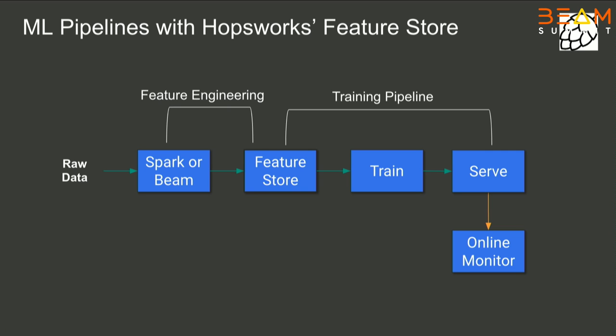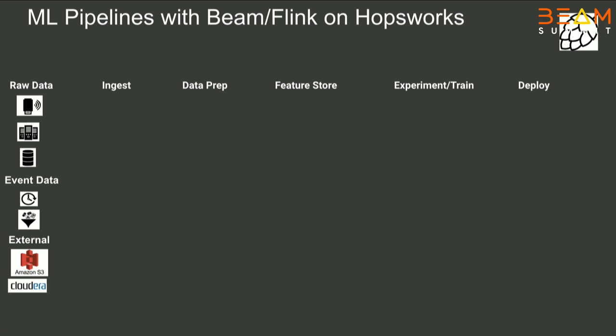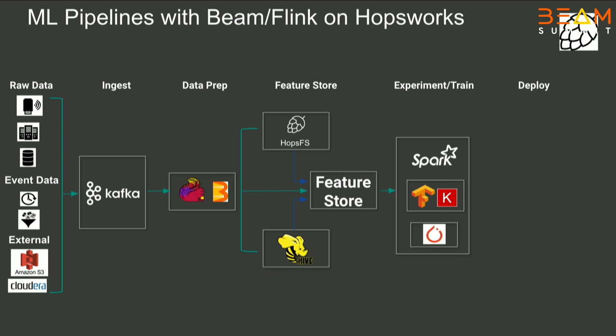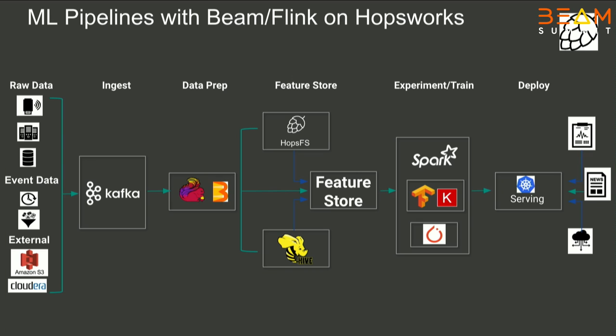The next example is HobbsWorks' feature store and machine learning pipelines, where feature engineering can be done with Beam as one of the options — Python on Flink again. Kafka is the input, data preparation is done with the Flink runner, and then the features are stored in the feature store. Beam is used here for TFX machine learning support for feature engineering, TensorFlow Transform, data validation, and also for model analysis. The team will talk about this more in their talk this evening.